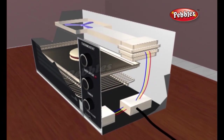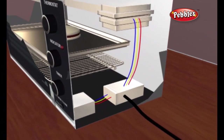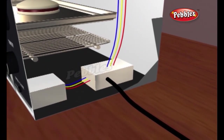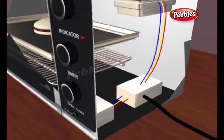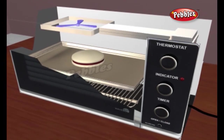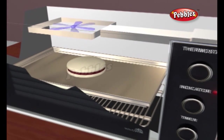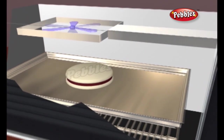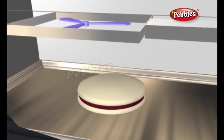When you start cooking, the magnetron takes electricity from the power outlet and converts it into high-powered 12 cm radio waves. It blasts these waves into the food compartment through a channel called a wave guide. The food sits on a turntable, spinning slowly round so the microwaves cook it evenly.